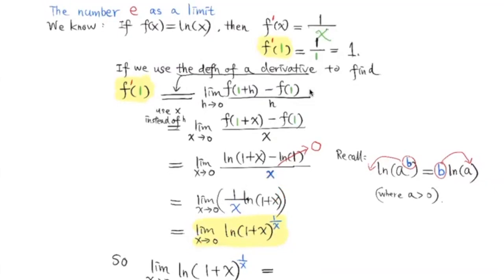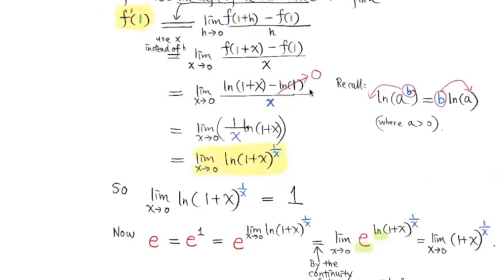So this limit is equal to f prime of 1, where f of x is equal to ln of x. We also know that f prime of 1 is equal to 1. So this limit here is equal to 1. So the limit of ln of 1 plus x to the 1 over x power as x approaches 0 is equal to 1.